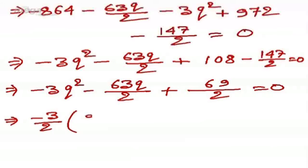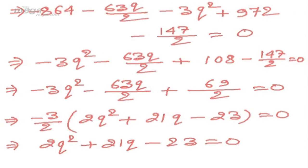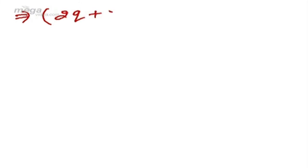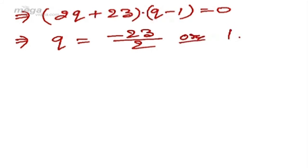Taking out the common factor -3/2, the equation becomes 2q² + 21q - 23 = 0. Factorizing: (2q + 23)(q - 1) = 0. Therefore q = -23/2 or q = 1.